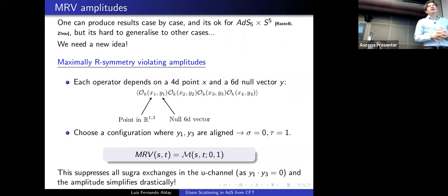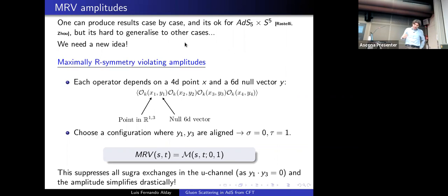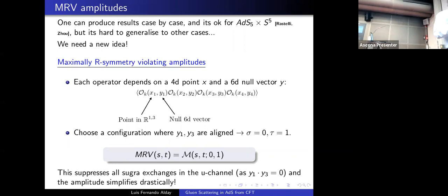For any values of k1, k2, k3, k4, with some effort one can produce results on a case-by-case basis. With all these case-by-case results it is in principle possible to guess a general answer — which was done by Rastelli and Zhou — but this is still not fully satisfactory because it is very hard to generalize to other cases. So we actually need a new idea.